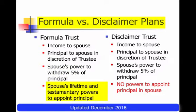Now we're getting into some differences. In the trust created by a formula, the surviving spouse can have the power to appoint the property of the trust — meaning the spouse can have the power to decide how the trust property will go to the children and descendants. You can even make it broader than that, and the surviving spouse can have that power while she's alive.